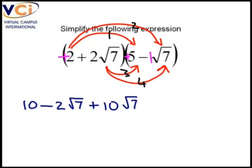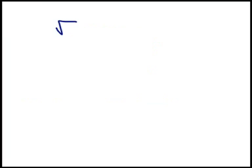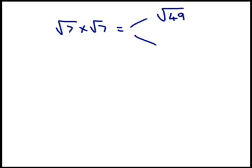And then arrow number four, plus times minus is a minus, two times one is two, and square root seven times square root seven will be the following. Square root seven times square root seven can be written in two ways. We can say it's the square root of seven times seven is forty-nine, or we can say it's the square root of seven squared.